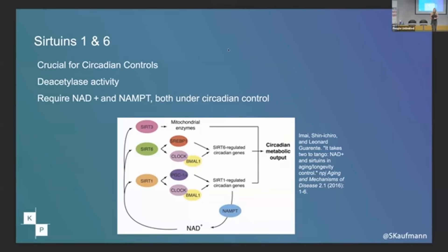They're deacetylases — that's what they are. They're epigenetic modifiers that turn other enzymes on and off, usually on, sometimes off. And of course, because they're sirtuins, they require NAD as a cofactor. We all know that over the course of time, we become NAD deficient.